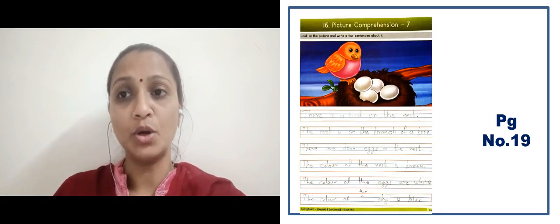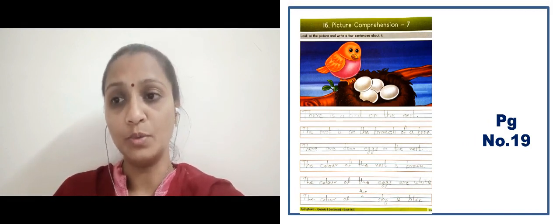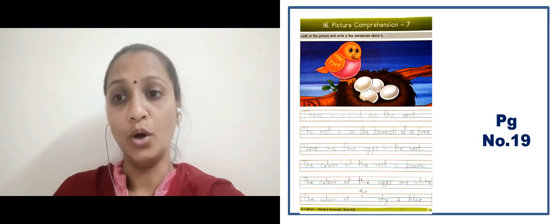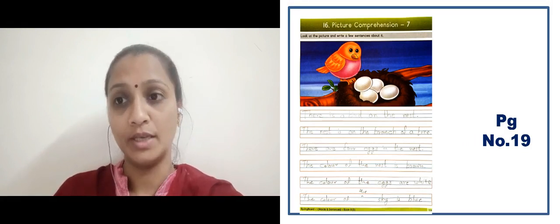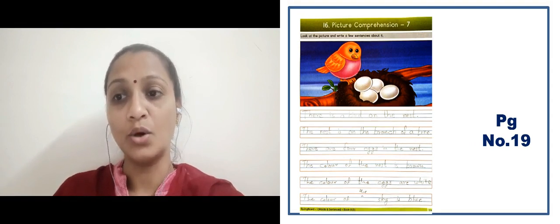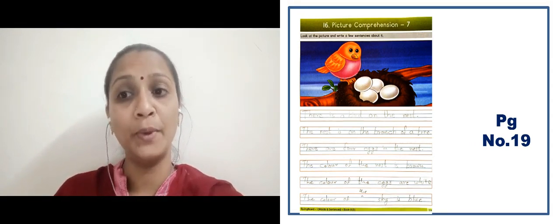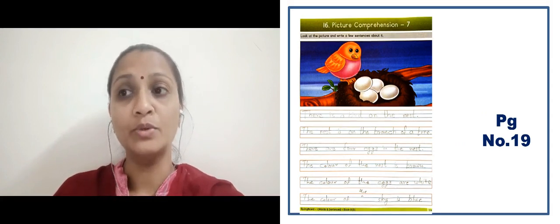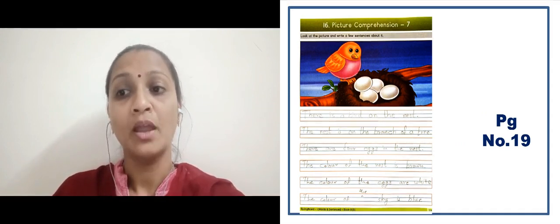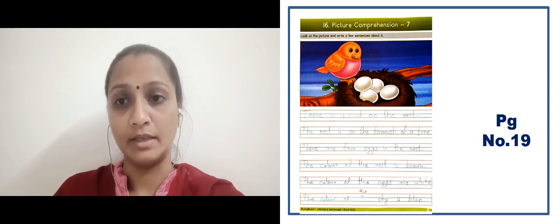In the next slide there is a picture comprehension on page number 19. Here we have to observe the image. There is a bird on the nest — yahan pe ek bird hai jo nest ke andar hai. The nest is on the branch of the tree — jo nest hai woh jo ped hai uski tali ke upar hai. There are four eggs in the nest — nest ke andar chaar ande hain.